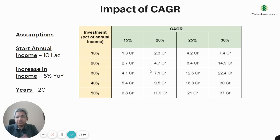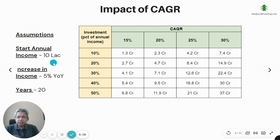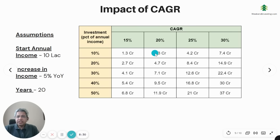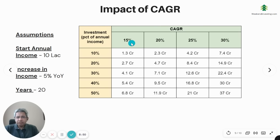The third factor is CAGR. Let's see what this example says: starting at 10 lakhs with income growing at 5%, over 20 years, investing 10% of your income. At a CAGR of 15%, you achieve 1.3 crores at the end of 20 years. At 20%, you achieve 2.3 crores. Just a five percent change in CAGR makes your end capital go up by 40 to 45 percent. Another five percent almost doubles it, and another five percent gives you an 80 to 90 percent increase. That is the impact of CAGR.